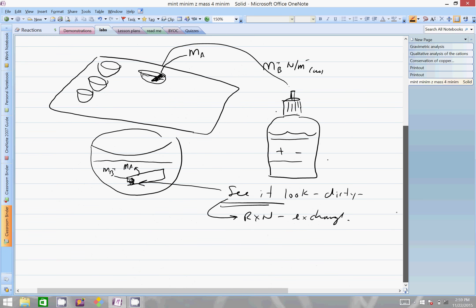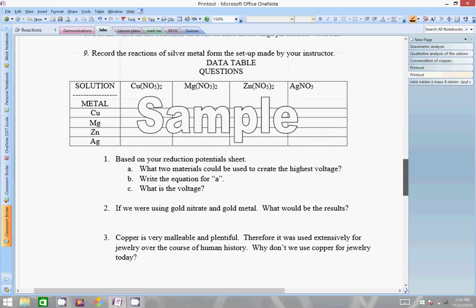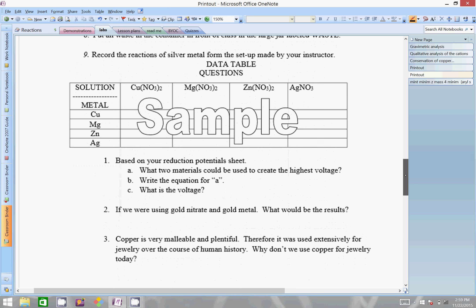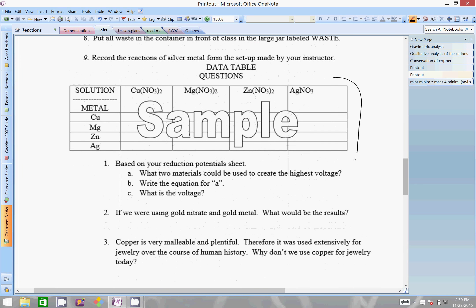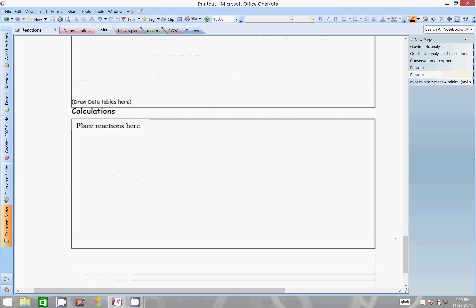Next up, let's look at the actual lab. The lab itself has a data table here. I have four metals and four metal solutions, so let's draw them out.